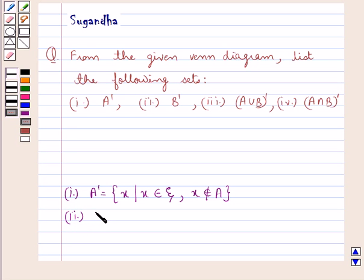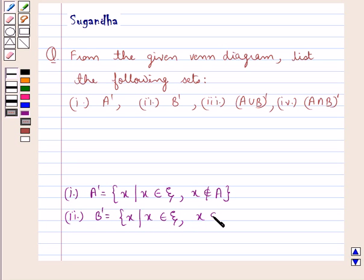Then, B complement would be the set containing the element X such that X belongs to the universal set ξ and X does not belong to the set B.